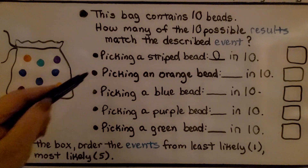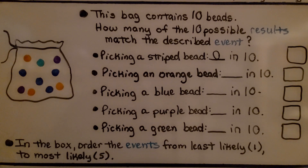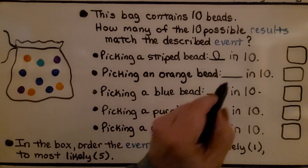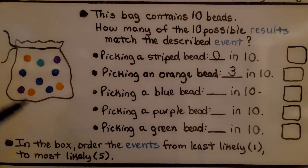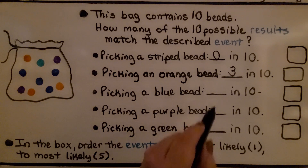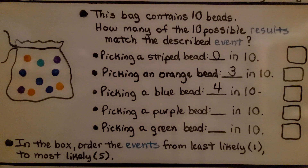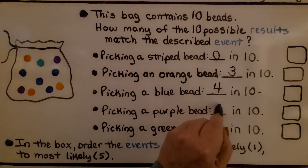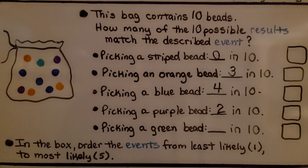What about picking an orange bead? I see 3 orange beads, so we would have a 3 in 10 chance of picking orange. What about picking blue? There are 4 blue beads, so we would have 4 in 10 for the possible results of picking blue. What about picking purple? There are 2 purple beads, so we have a 2 in 10 chance of picking purple. And green? There's only 1 green bead, so we have a 1 in 10 chance of picking green.